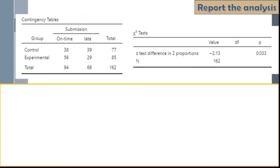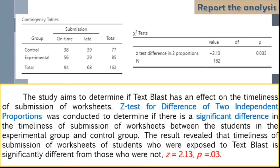This analysis report follows the APA format. Take note of the terms in blue font and the format of reporting values in red font. The study aims to determine if text blast has an effect on the timeliness of submission of worksheets. A Z-test for difference of two independent proportions was conducted to determine if there is a significant difference in the timeliness of submission of worksheets between students in the experimental group and control group. The results revealed that the timeliness of submission of worksheets of students who were exposed to text blast is significantly different from those who were not, represented by the given values.